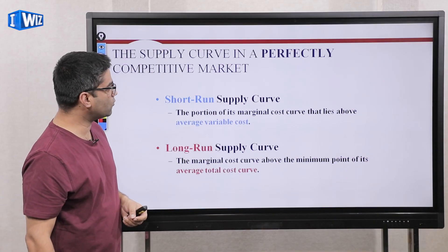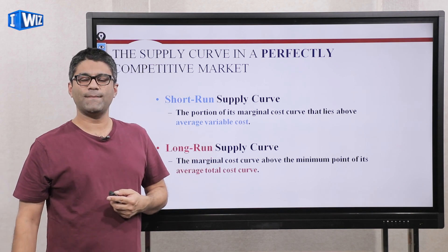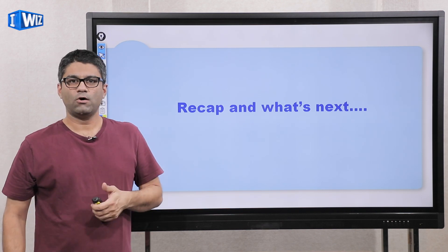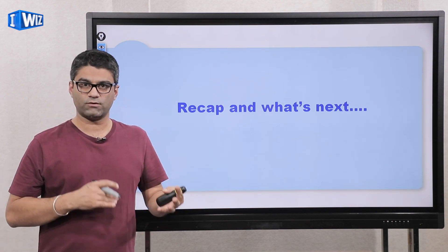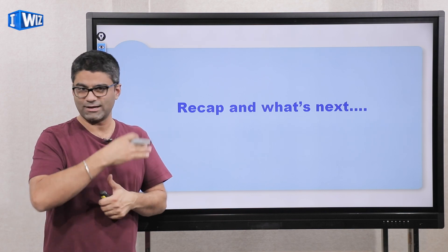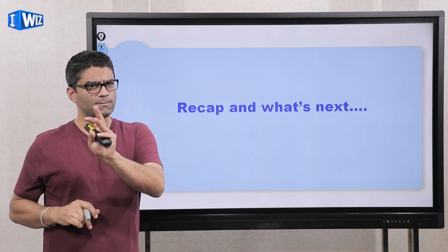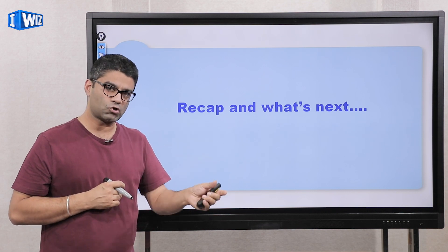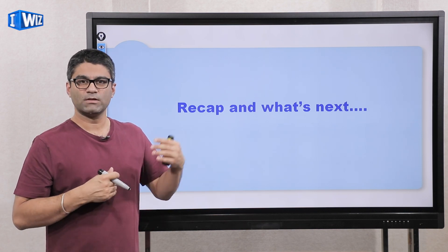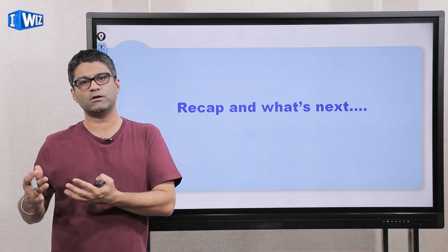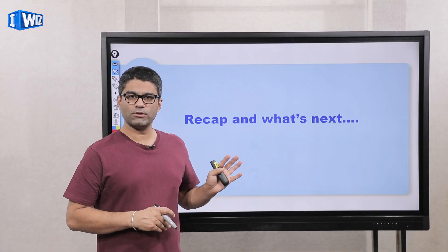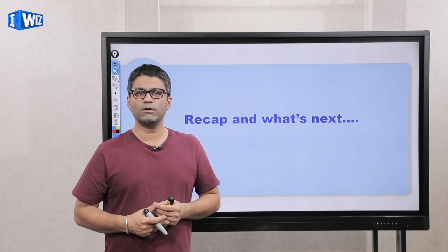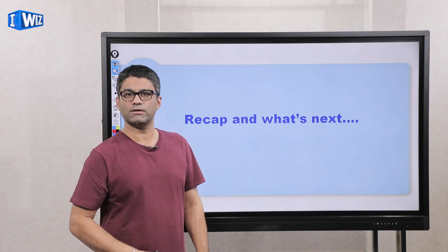To summarize: make sure you're clear on how a producer changes their decision in the short versus long run — both in terms of how much to produce (MR equals MC) and whether to produce or shut down. Note that some books use 'shutting down' for both short and long run, but shutting down is more of a short run concept and exiting is a long run concept. In the next video we'll talk about how you measure profits for a producer on the graph.